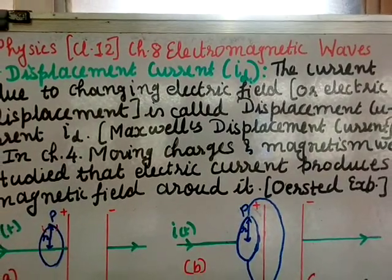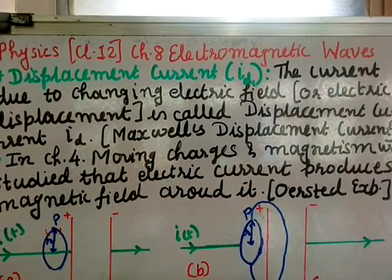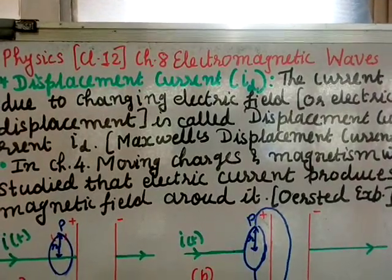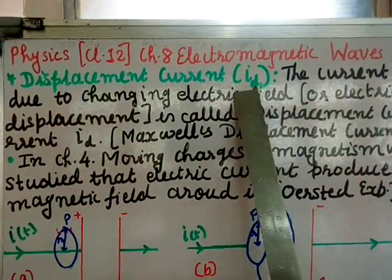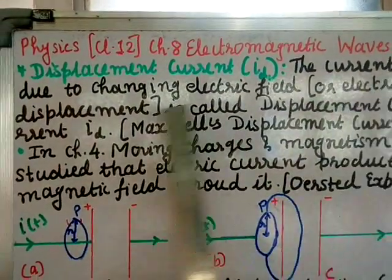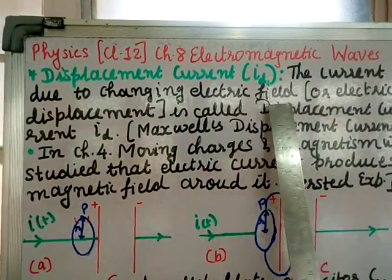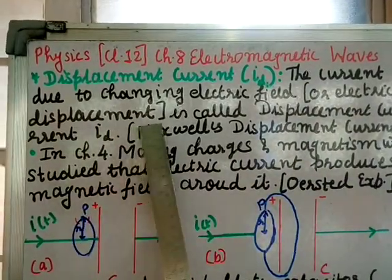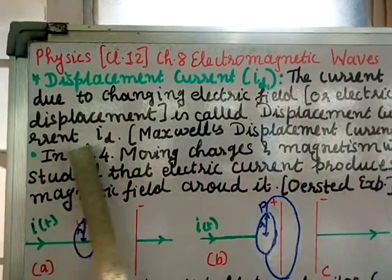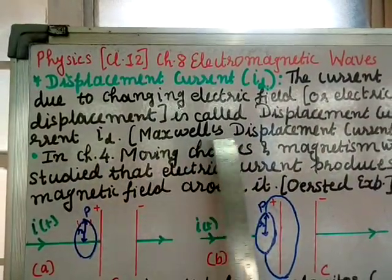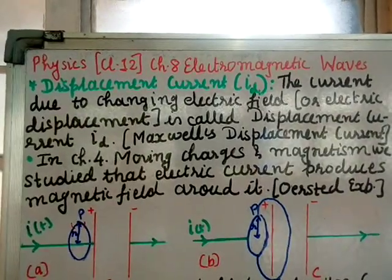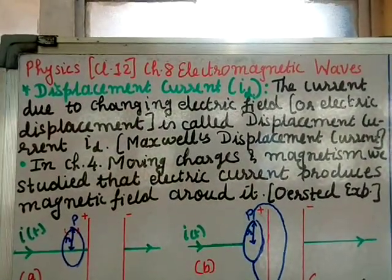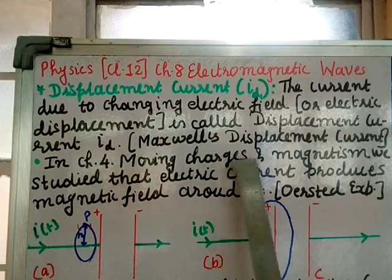Physics class 12, chapter 8: electromagnetic waves. Displacement current id is the current due to changing electric field or electric displacement, and is called displacement current id or Maxwell displacement current. This is the definition of displacement current.